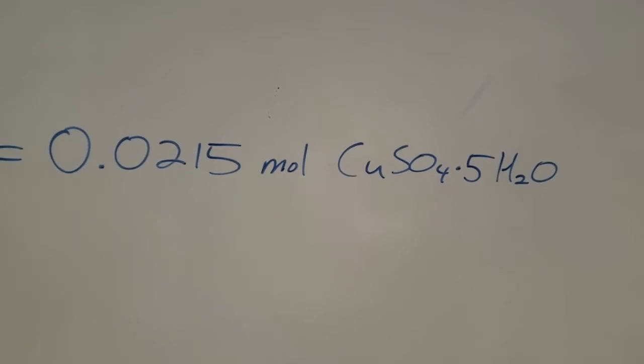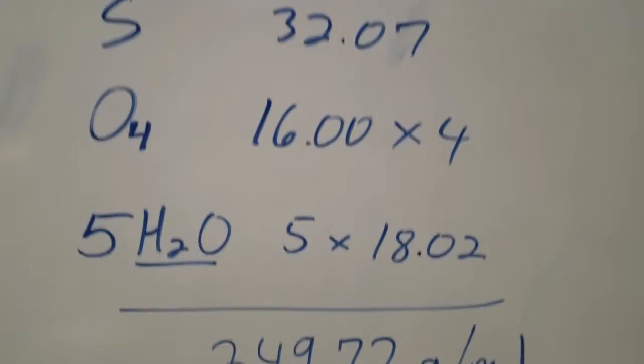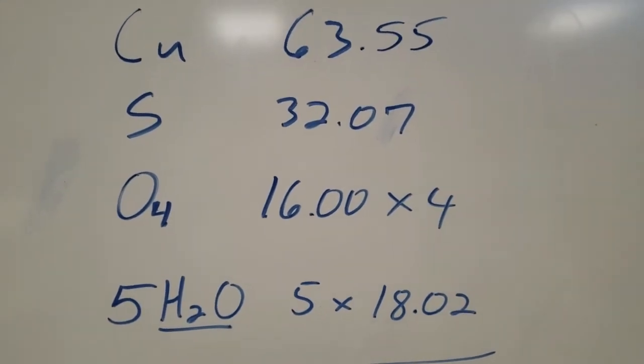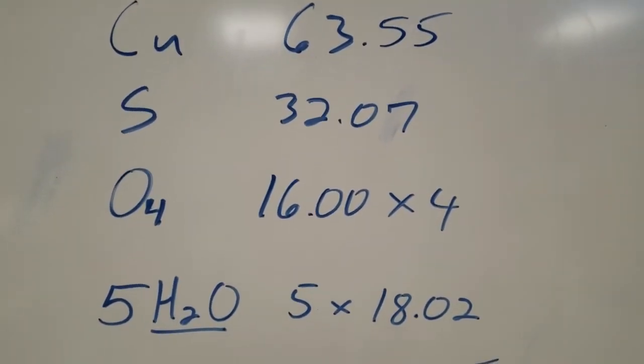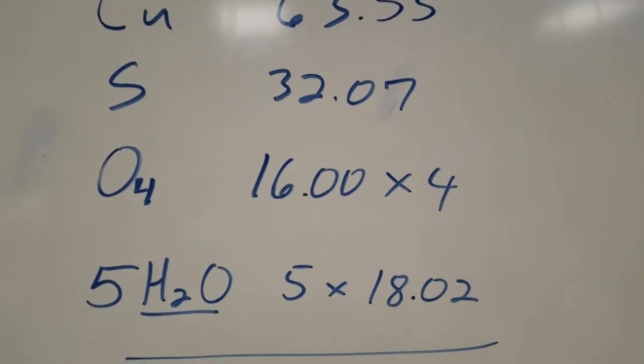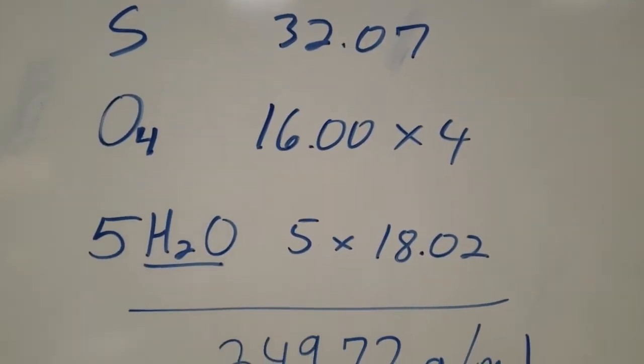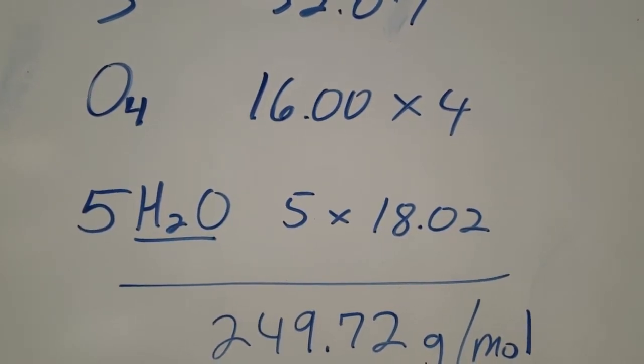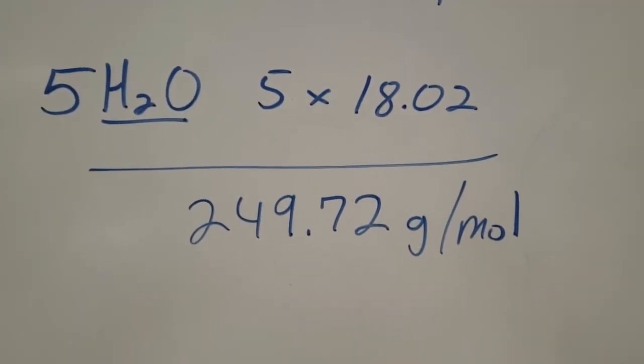We don't have mole machines. We have mass machines, so we're going to need to figure out the mass. So we have one copper, one sulfur, four oxygens, and five waters, which you could split out if you want to, but waters weigh 18.02 each. So the formula weight for this compound with the pentahydrate is 249.72.